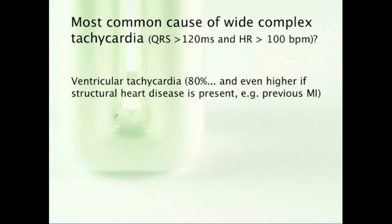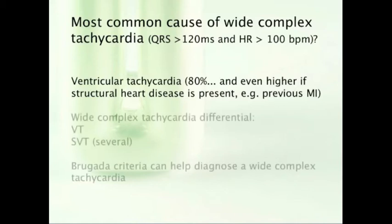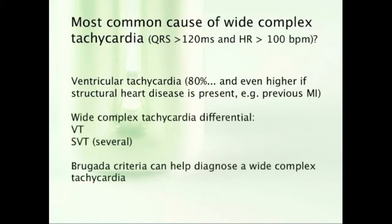Other causes of wide complex tachycardia besides VTAC include supraventricular tachycardia. Any supraventricular tachycardia in conjunction with conduction disease could cause wide complex tachycardia — for example, people with SVTs and concomitant left or right bundle branch blocks, or people with antidromic AV reentrant tachycardia, and so on. There are also the Brugada criteria for helping you diagnose these, which you can look up.